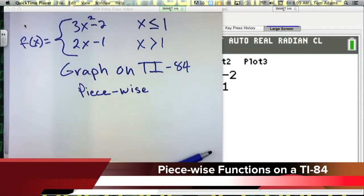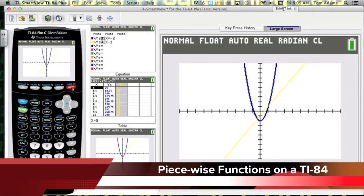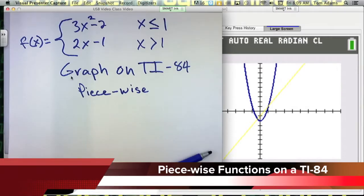Part of the challenge is that when I want to graph this piecewise function, if I plug it into a TI-84 calculator and hit graph, it graphs across the whole domain. So the issue here is how do I restrict the domain? How do I get it to use the function 3X squared minus 2 for only the X values less than or equal to 1, and then use 2X minus 1 as my graphical representation for all X values greater than 1.